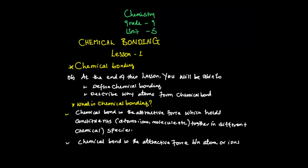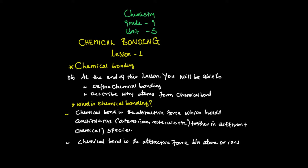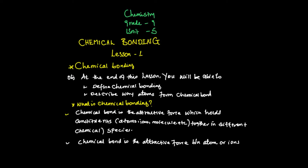So let's come to the introduction part of this lesson. Under this lesson on chemical bonding, we will discuss: what is chemical bonding, the definition of chemical bonding, and why atoms form a chemical bond. At the end of this lesson, you will be able to define chemical bond and describe the ways atoms form chemical bonds. Chemical bonding can be categorized into ionic bonding, covalent bonding, and metallic bonding. We will see them one by one.